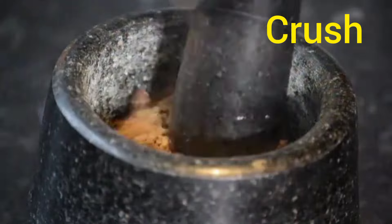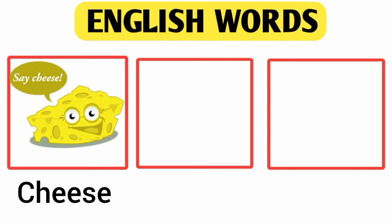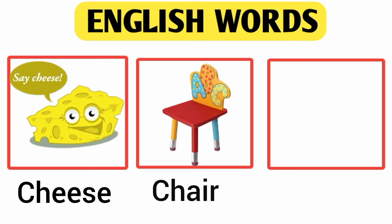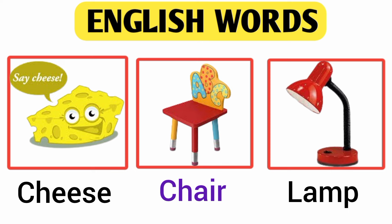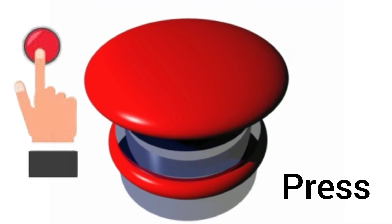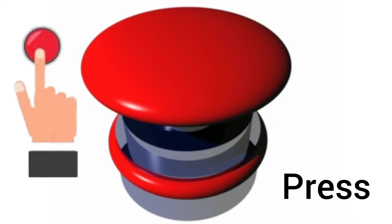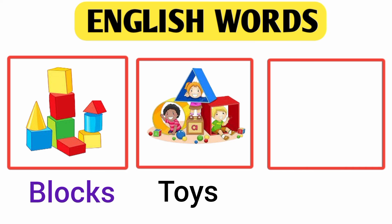Push. Cheese. Next word is Tier. This is Tier. Lamp. This is lamp. Press. Blocks. This is Blocks.